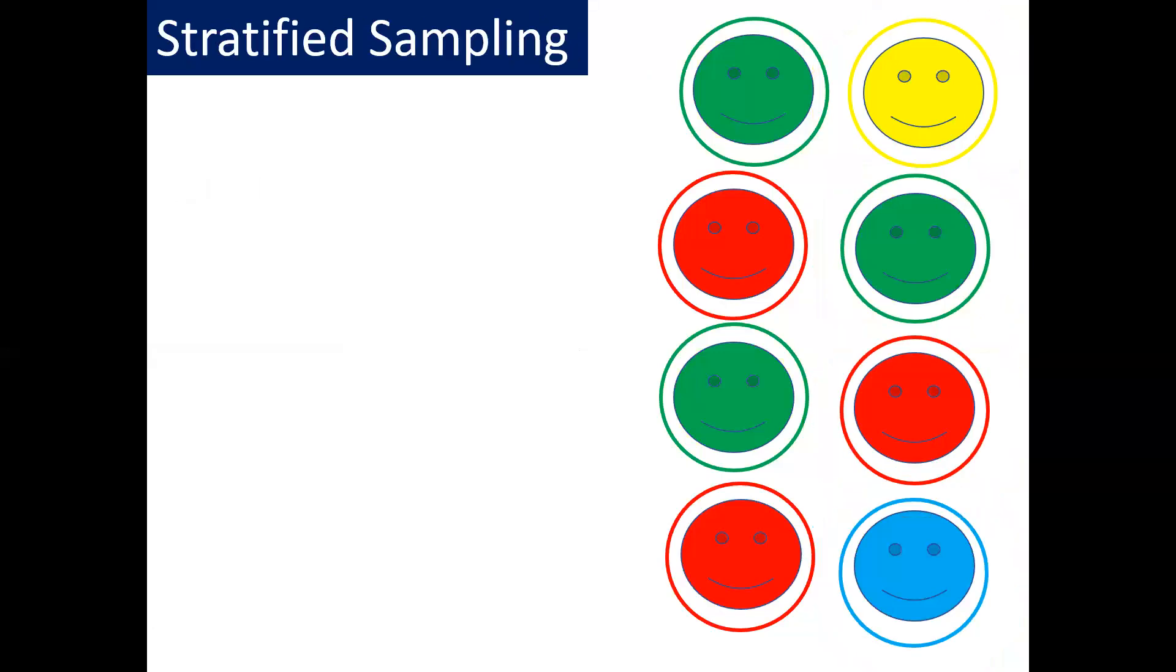The last type of sampling and probably the most difficult is what we call stratified sampling. Now stratifying something means putting it into layers. So that gives you a bit of an idea of how this sampling works. Again, we've got eight people here. Now this time we need to think about who we've actually got in our data. So we've got three green people, we've got three red people, only one yellow person and only one blue person.